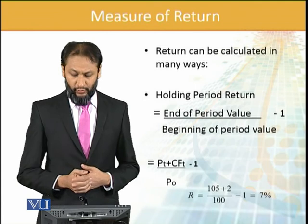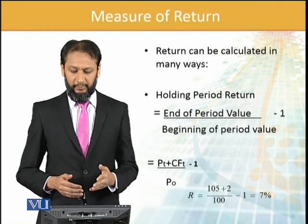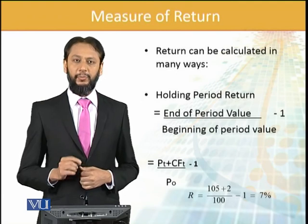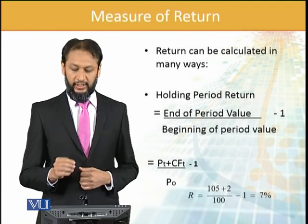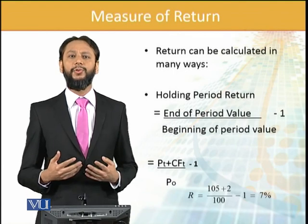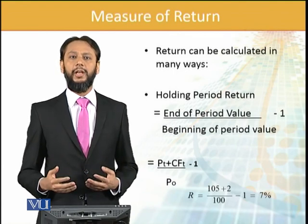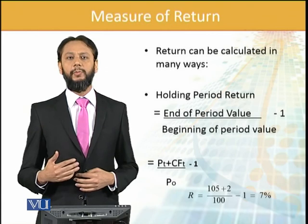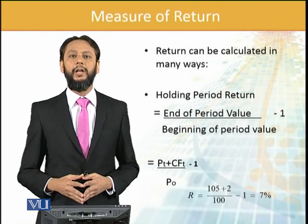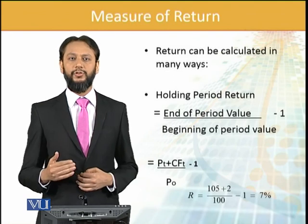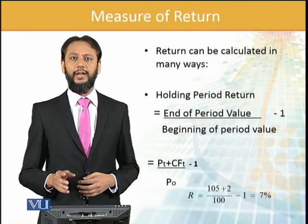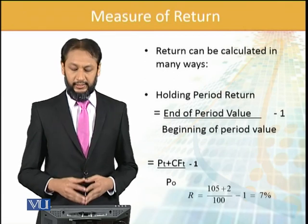For example, placing this in the formula: pt is the price at time t, divided by p0 which is the price at time zero, plus any CF. CF here refers to cash flow. When you buy a share you can also receive some cash flow, like in the form of a dividend, or if you buy a bond you can be getting some form of interest. So those cash flows are added to the closing value, then you deduct one from it and you get the return.